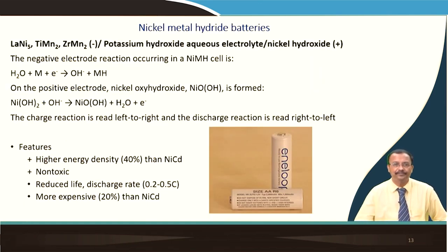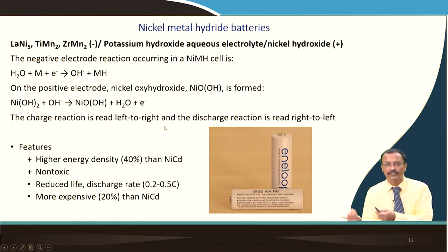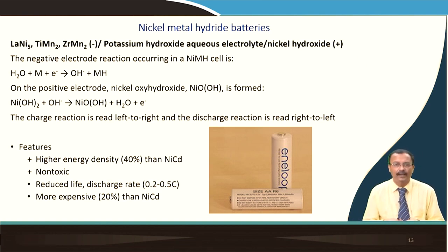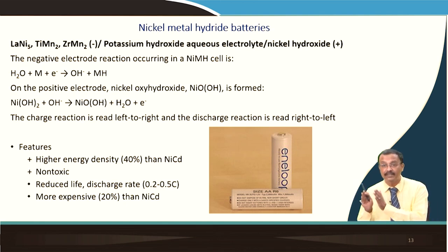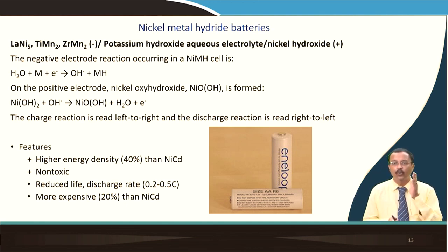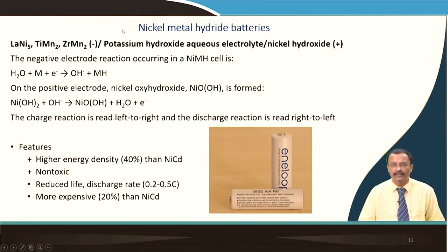In the nickel metal hydride battery, the negative electrode reaction produces nickel hydroxide and on the positive electrode nickel oxyhydroxide is formed during charge. It has a high energy density, 40 percent higher than nickel cadmium, and is non-toxic, but has reduced life. The discharge rate is usually 0.2 to 0.5C — 1C means you discharge within 1 hour, so 0.2C means discharge in about 5 hours. It is more expensive than nickel cadmium.